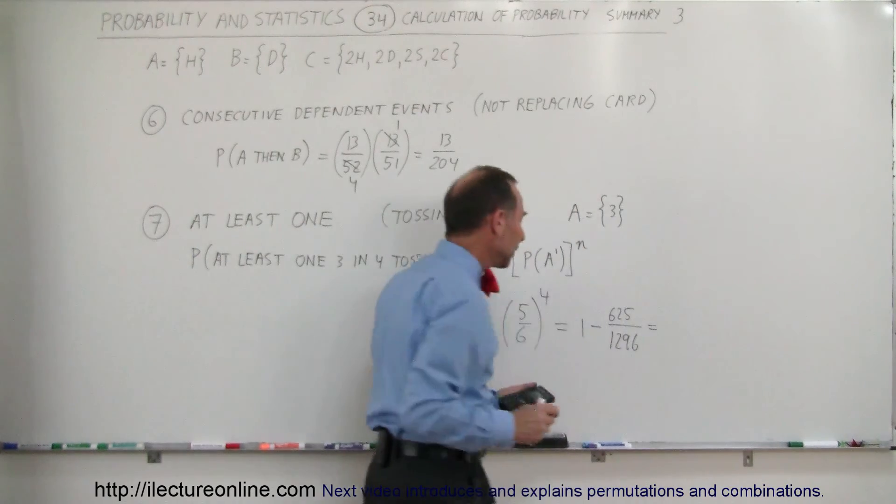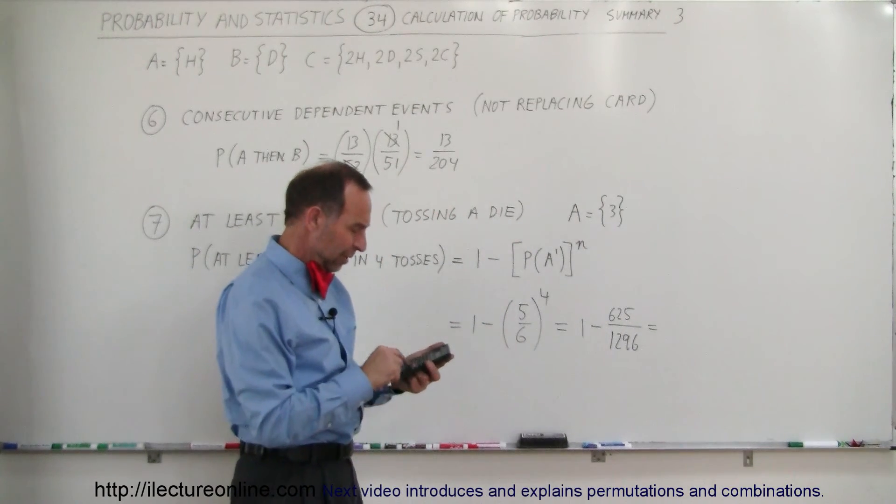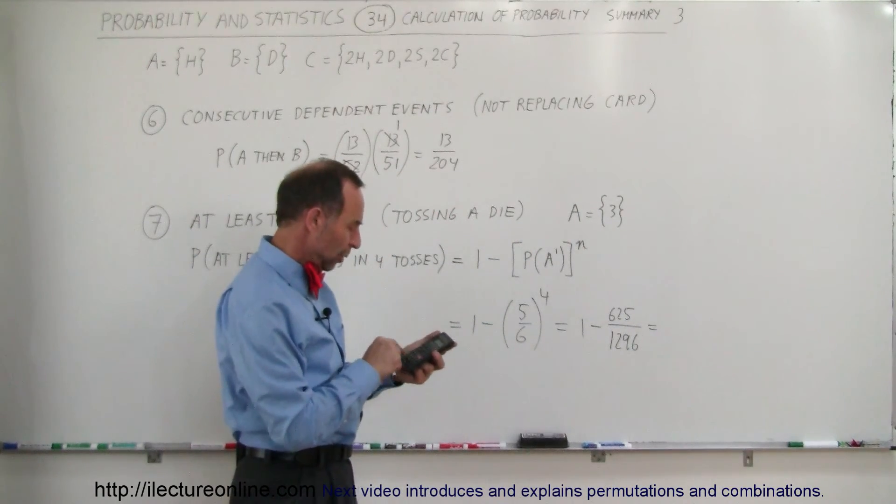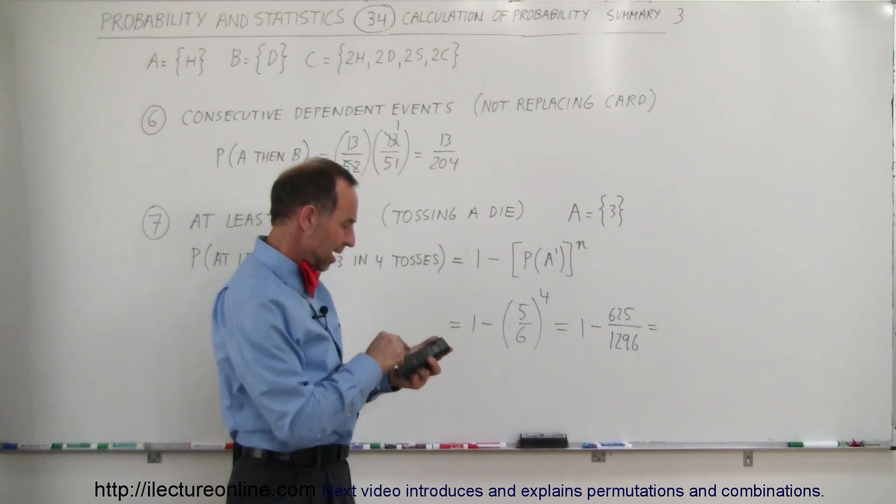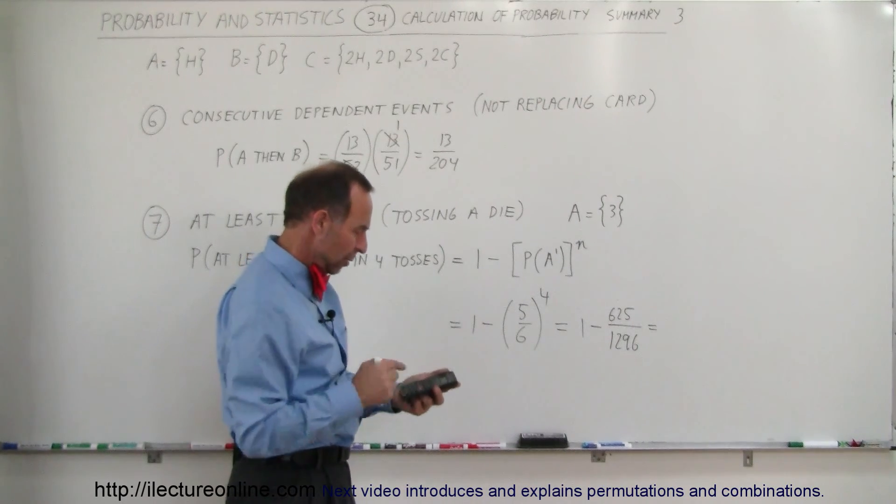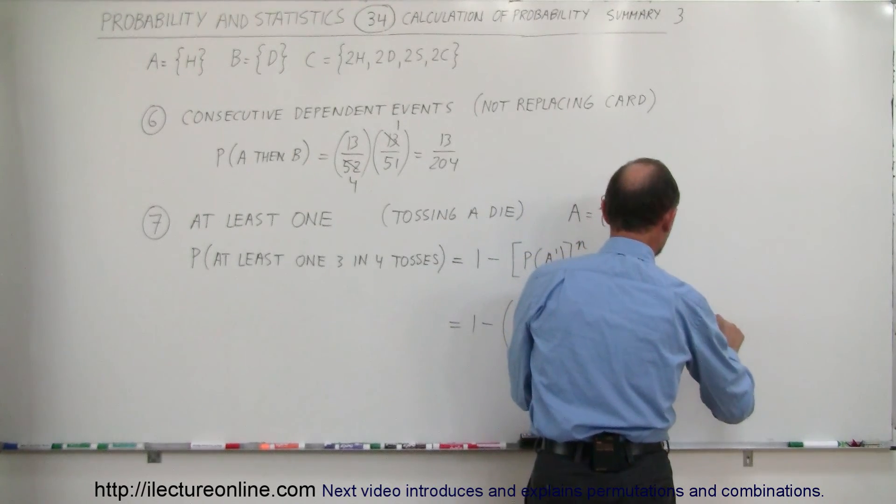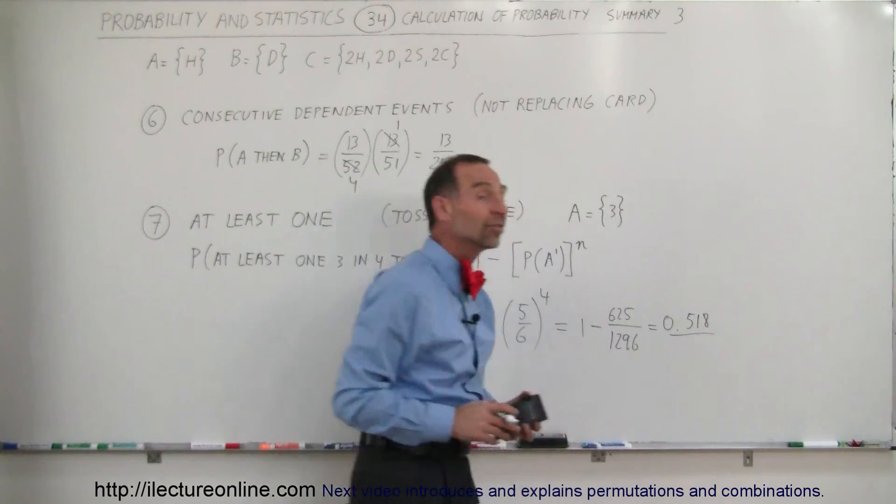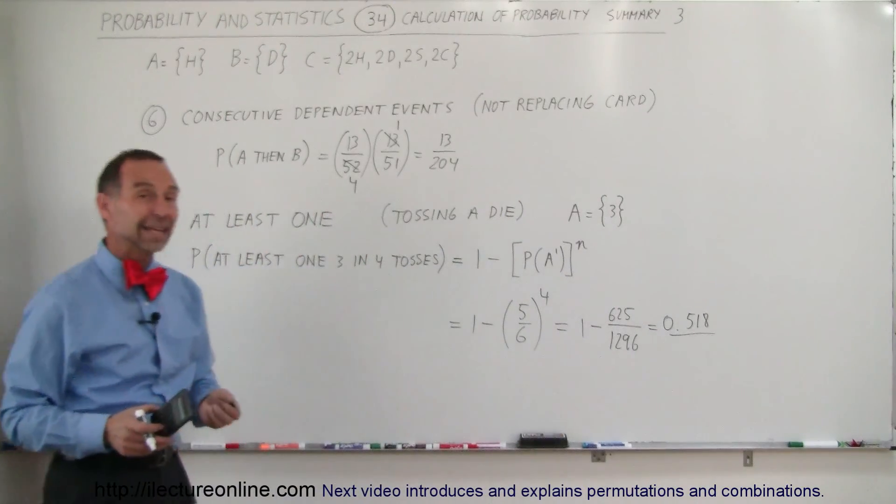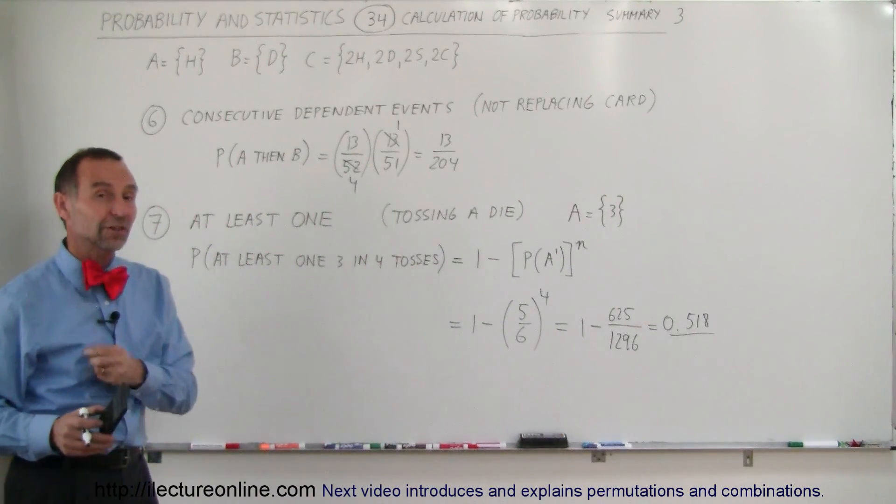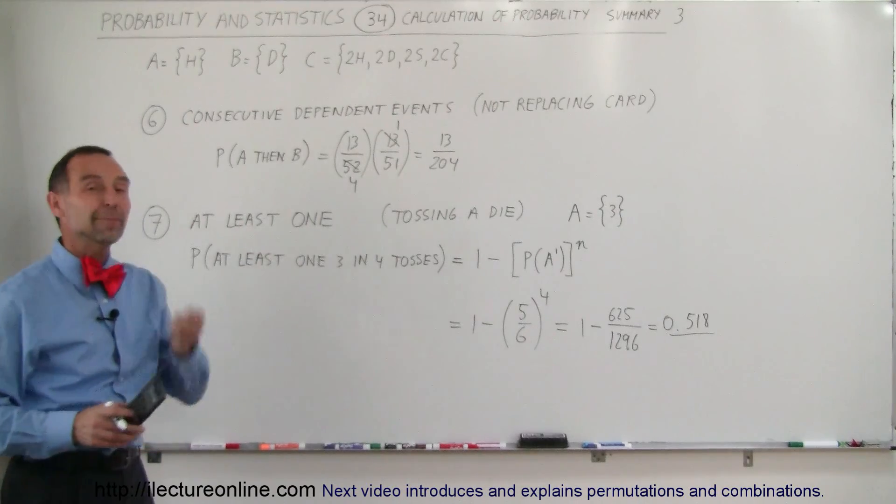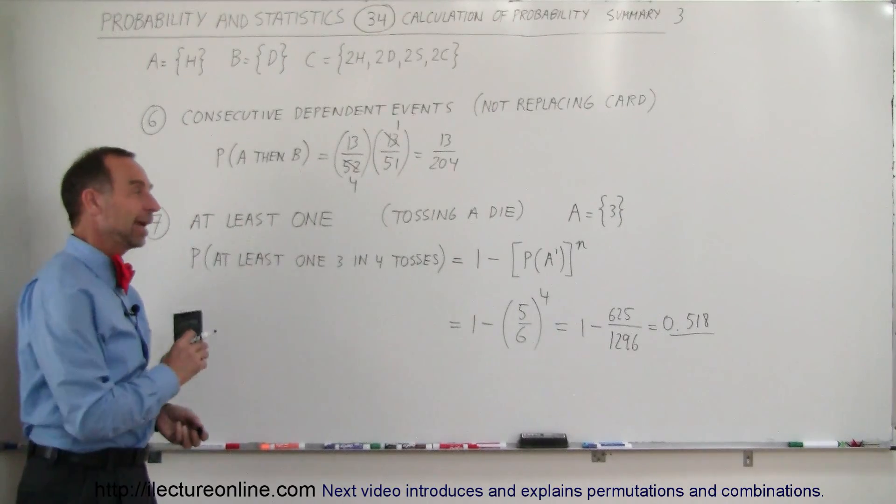And of course, we can get a probability number out of that, so if we take 625 divided by 1296, and we subtract that from 1, we get a probability of 0.518 to 3 decimal places. So the probability of getting at least 1, 3 when you toss the die 4 times is slightly better than 50%. And that's how we do that.